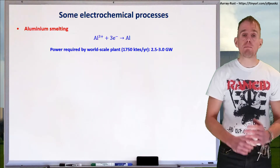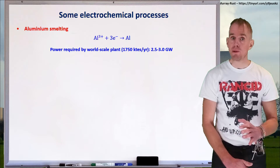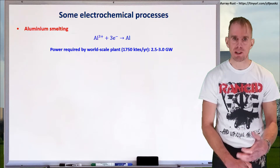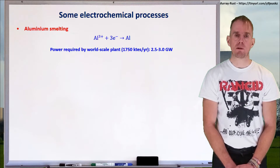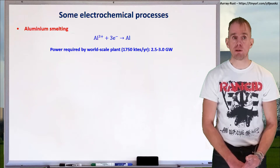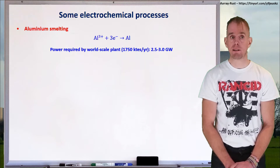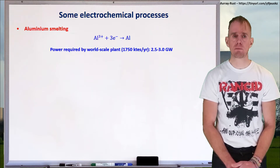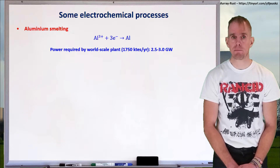There are many electrochemical processes in use today. I've cherry-picked two because they happen to be very large consumers of electricity, which is what I want to demonstrate. The first of these electrochemical processes is aluminium smelting. Aluminium is reduced from its ore bauxite into elemental aluminium in an electrolytic process.